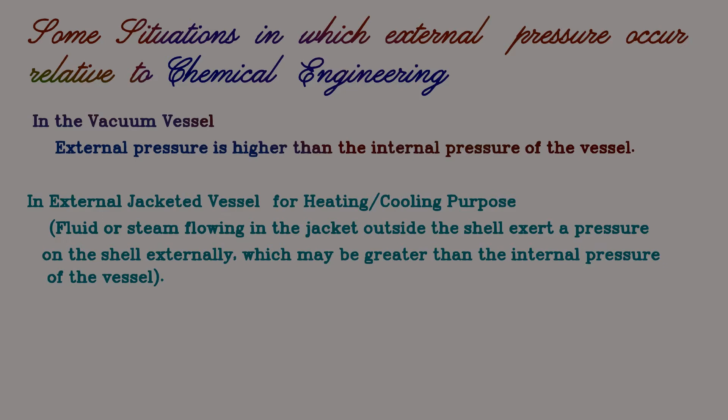The second type is an externally jacketed vessel for heating or cooling purposes. In this type of vessel, hot fluid, steam, or cold fluid flows outside the shell in the jacket, which may exert greater pressure than the internal pressure of the contents. Typical examples are the batch type reactor and vacuum crystallizers.